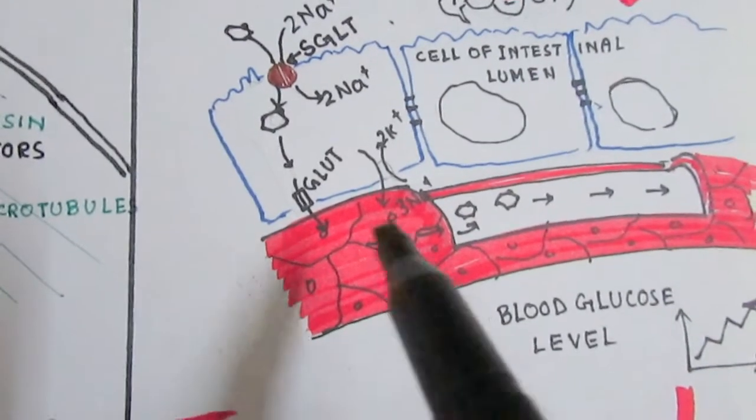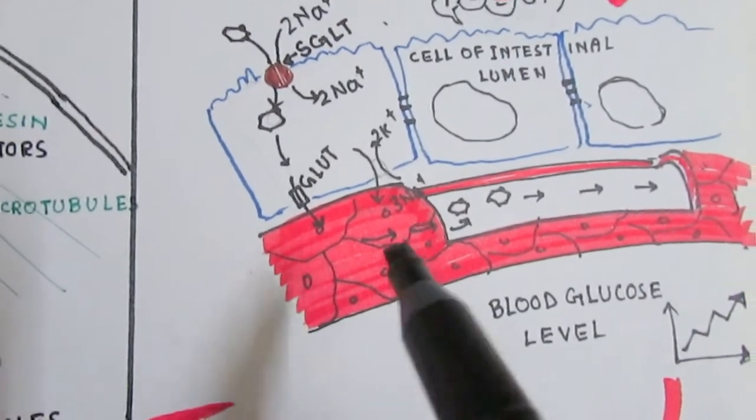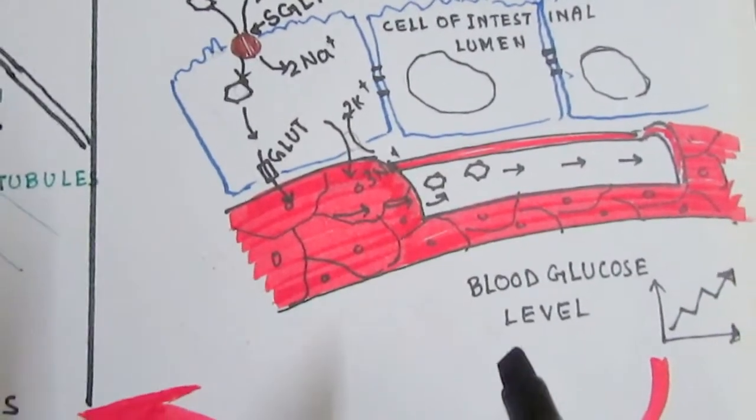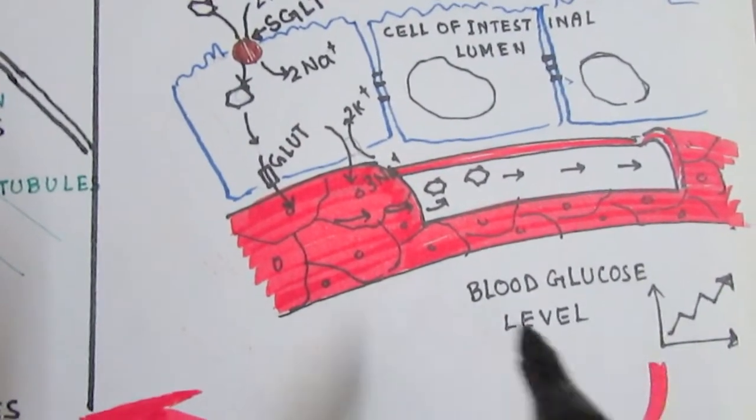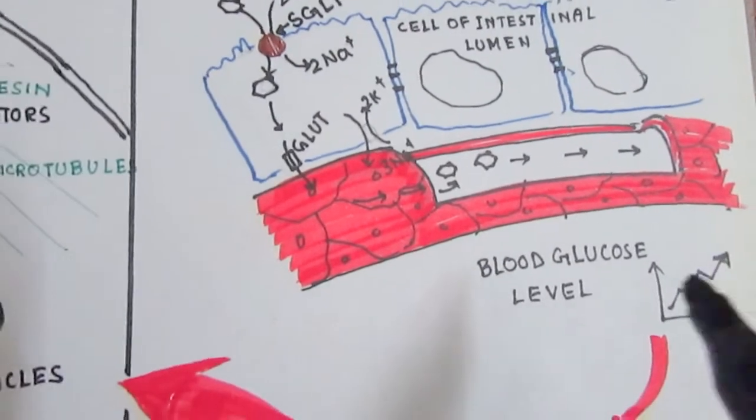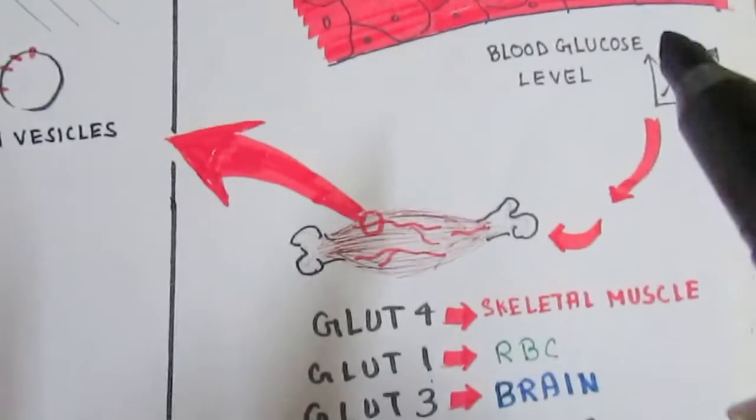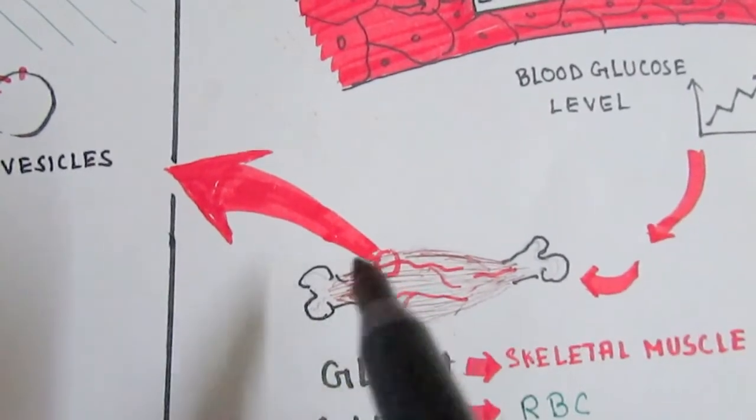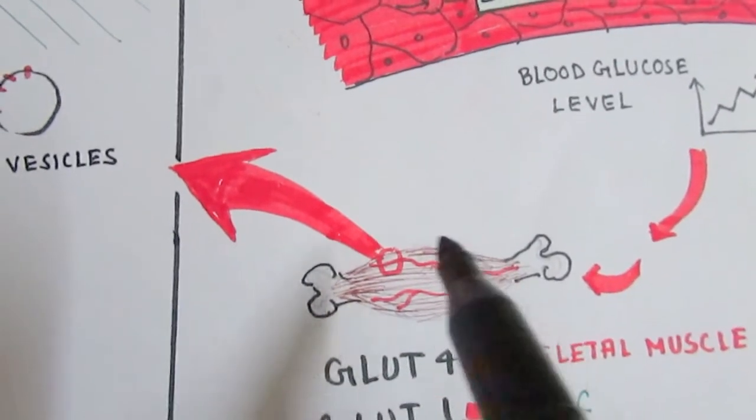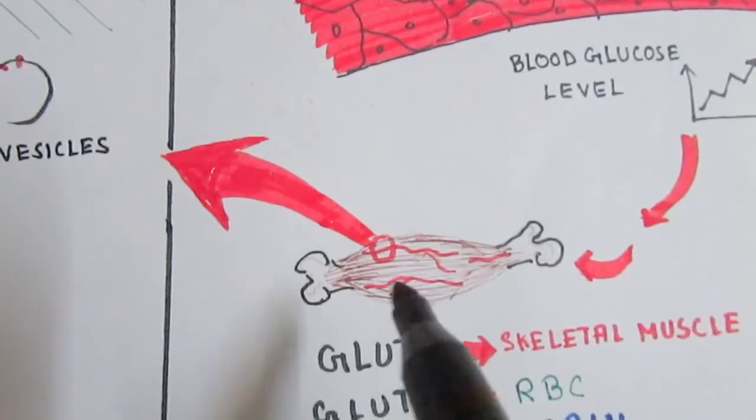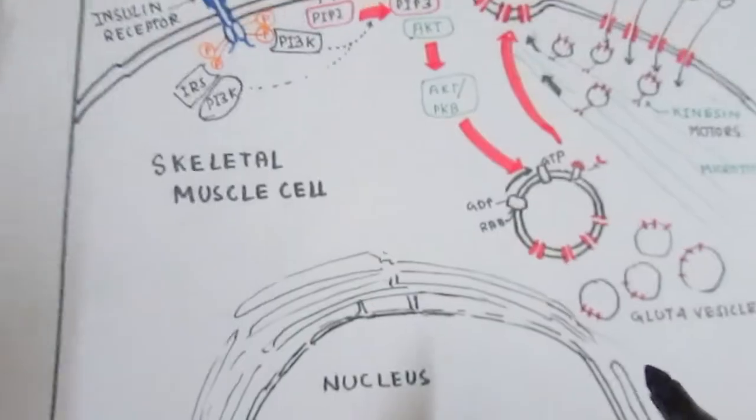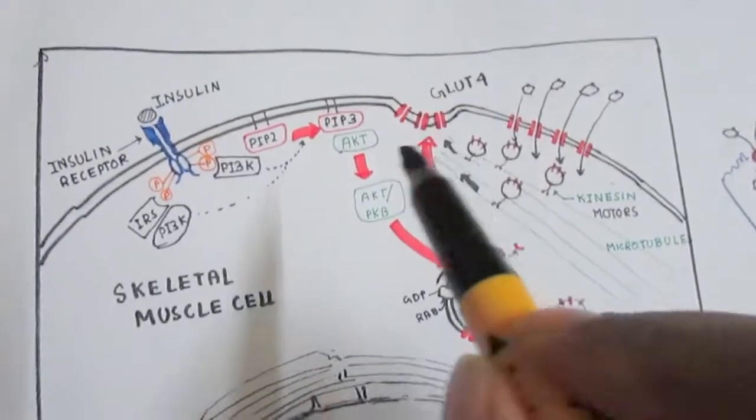Glucose will enter the capillary and spread around the body. Now the blood glucose level is pretty high. This glucose keeps circulating and gets into the skeletal muscle.